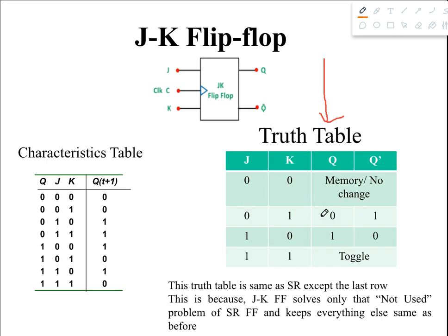This truth table for JK flip-flop is strikingly similar to the SR flip-flop — the first three rows are exactly the same. Only the last row varies, because in the SR flip-flop the state 1,1 was completely unusable. But in JK flip-flop, 1,1 produces toggle at the output. In the D flip-flop there wasn't even a 1,1 state. So in JK flip-flop we have the 1,1 state and no unusable state — meaning we can use all four possible states.